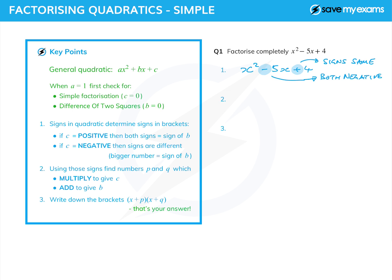We're looking now in step two for two numbers which are both negative, which multiply to give 4 and add to give -5. So c = +4, and we know both numbers will be negative. We've got two choices: -1 × -4 or -2 × -2.